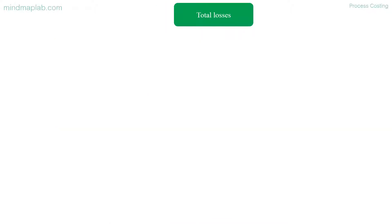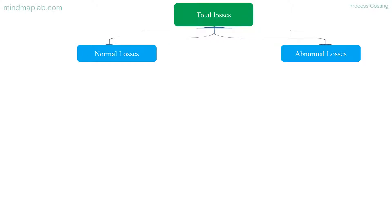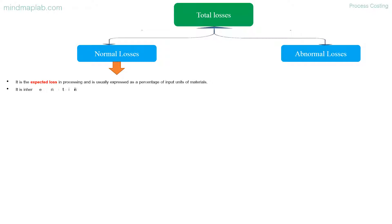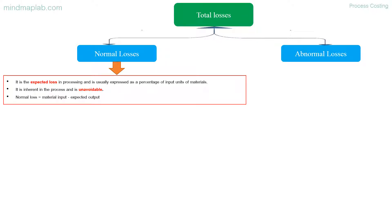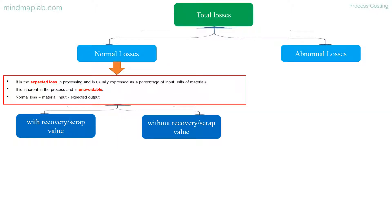Total losses includes both normal losses and abnormal losses. Normal loss is the expected loss in processing and is usually expressed as a percentage of input units of materials. It is inherent in the process and is unavoidable. Normal loss equals material input minus expected output.